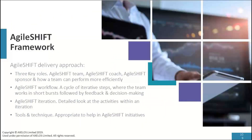In terms of AgileShift as a delivery approach — how we actually operationalize this framework — there are three key roles: the AgileShift team, the AgileShift coach, and the AgileShift sponsor, focused on how a team can perform more effectively and efficiently. There are also AgileShift workflows, a cycle of iterative steps where the team works in short bursts followed by feedback and decision-making, all done in iterations. AgileShift iterations are a detailed look at activities within each of those iterations.